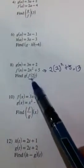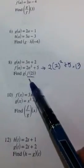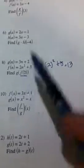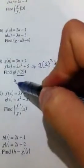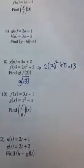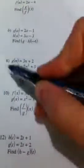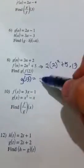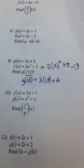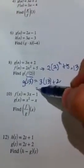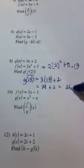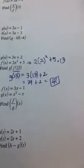We're down here again. G of F of 2. Well, we just figured out that the value of F of 2 is 13. So instead of looking for G of F of 2, I'm really looking for G of 13 now. So I can go back to my G function, 3N plus 2, and put 13 in for N. 3 times 13 is 39, plus 2 is 41. And that's your final answer.